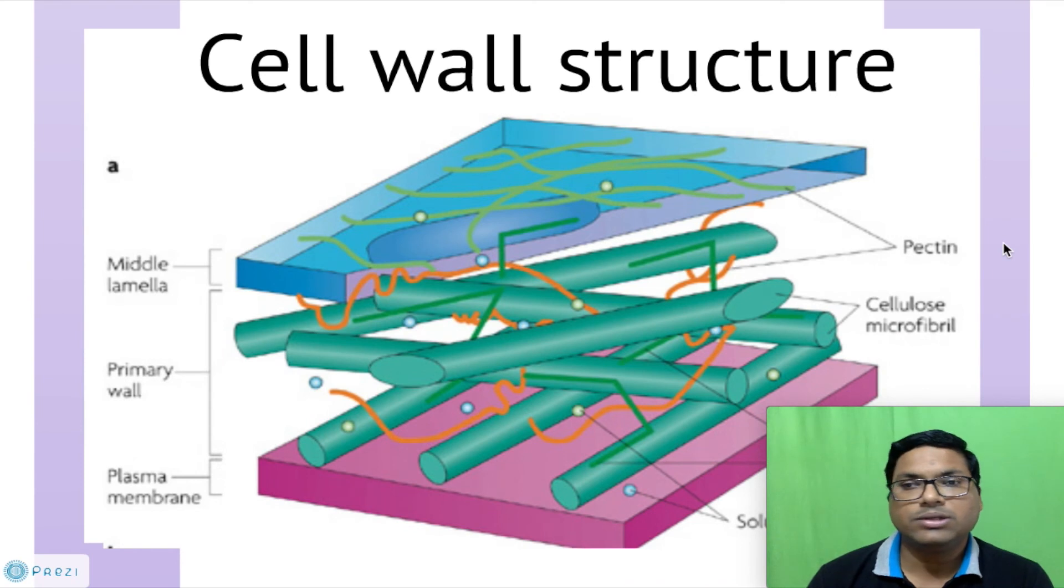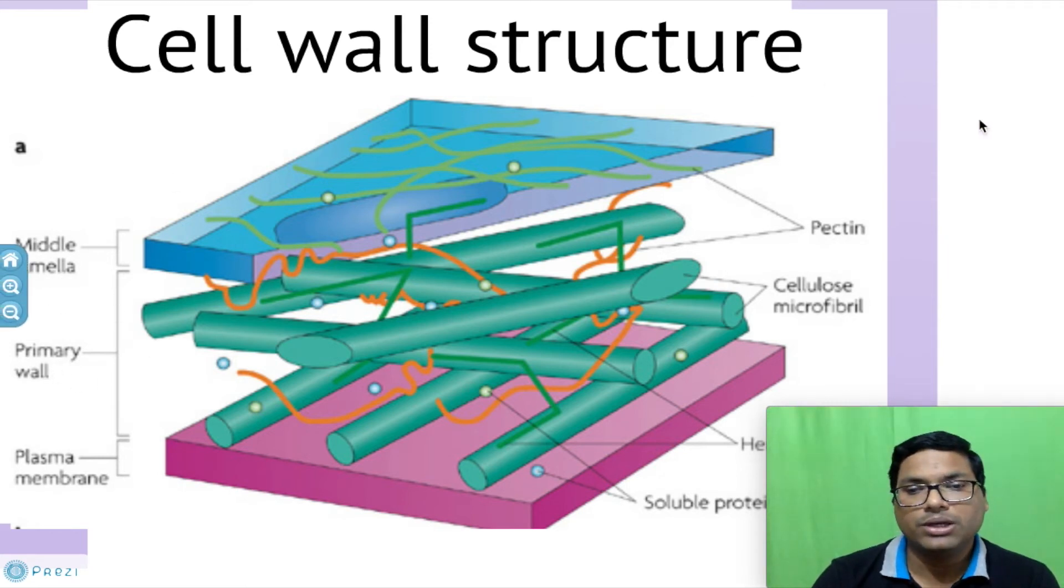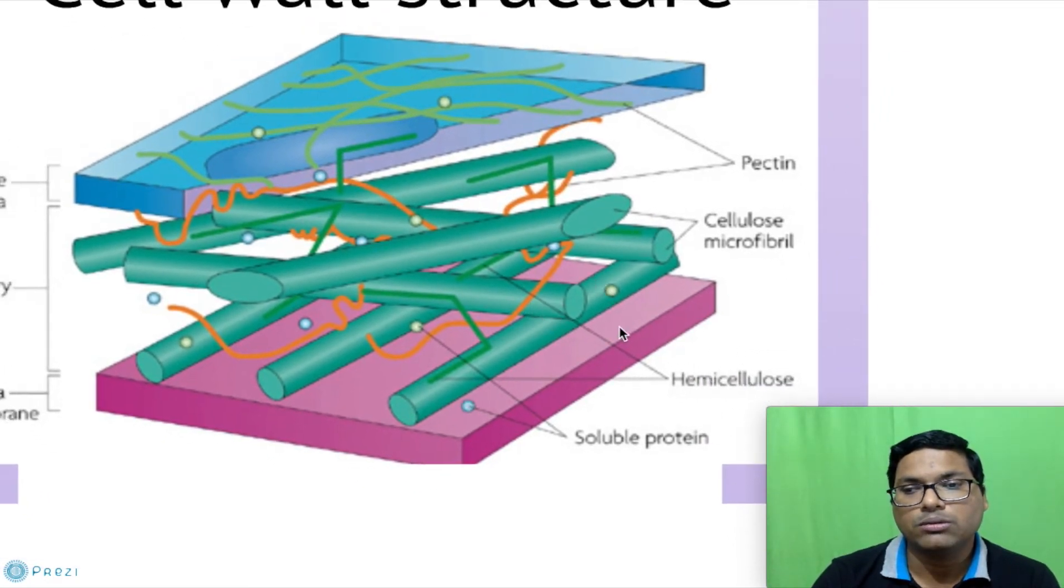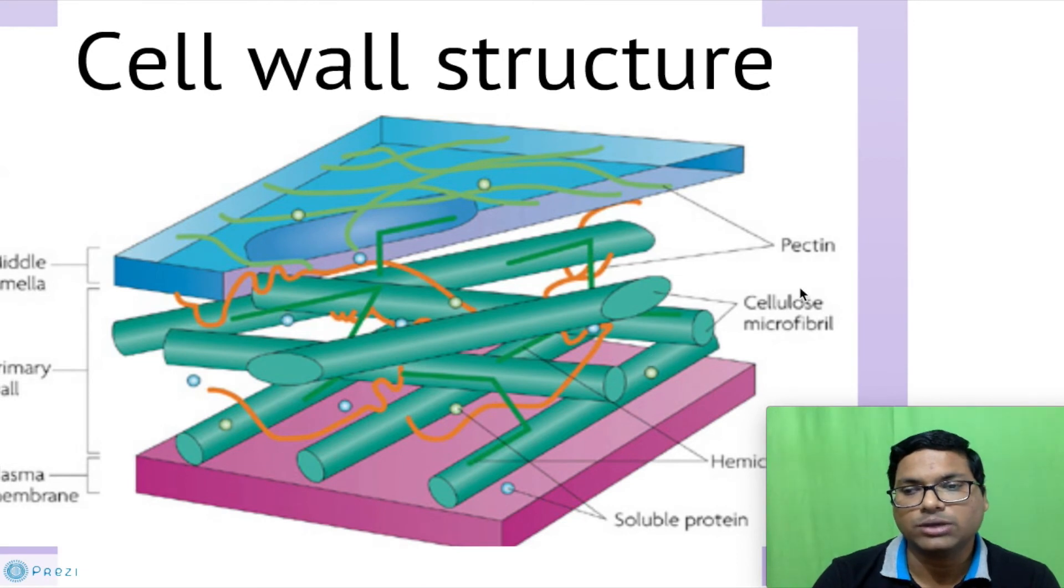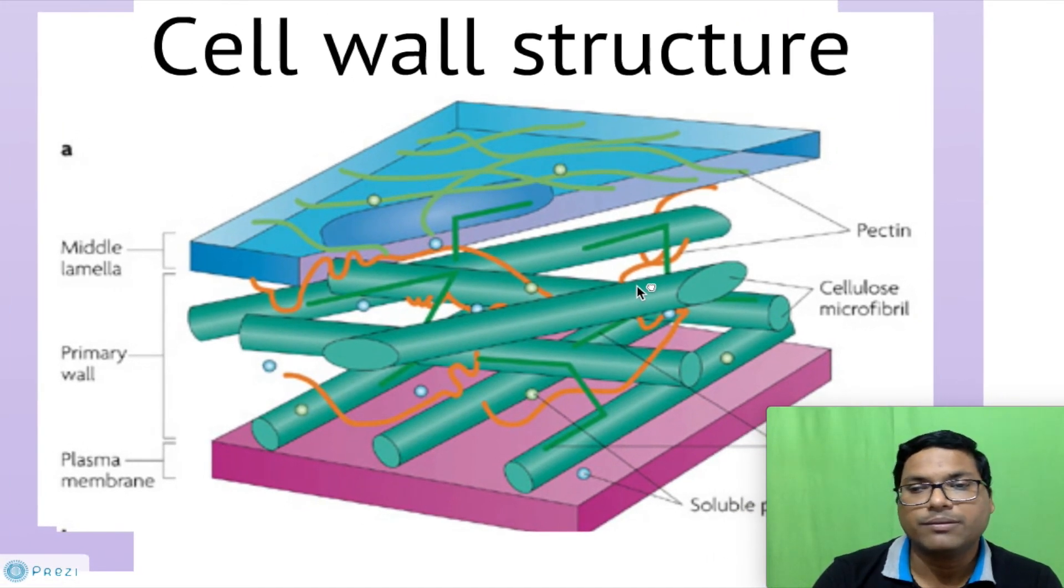Then let us come to the structure of cell wall. Now cell wall structure, if you see, the cell wall is divided into primary wall and middle lamella. Over here, the primary wall is actually consisting of hemicellulose molecule with addition to the cellulose microfibril already present. And in between this, there are pectin molecules which are forming a network with this cellulose and hemicellulose molecule in the middle lamella.